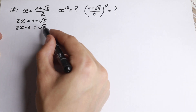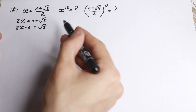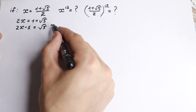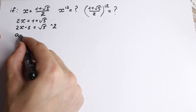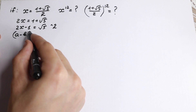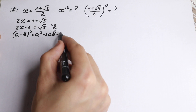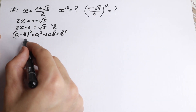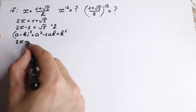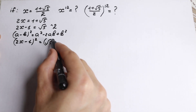Square root of 5 is not a good number in our case because we don't need a square root here — this is a really bad sign for us. So let's raise both sides to the square. This uses our formula: (a minus b) squared equals a squared minus 2ab plus b squared. So (2x minus 1) squared equals square root of 5 squared.